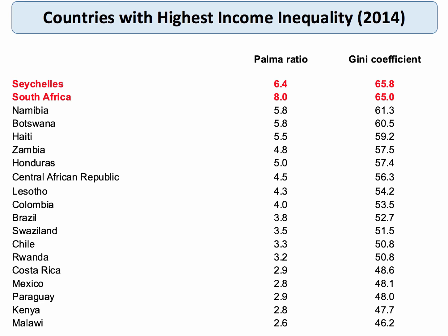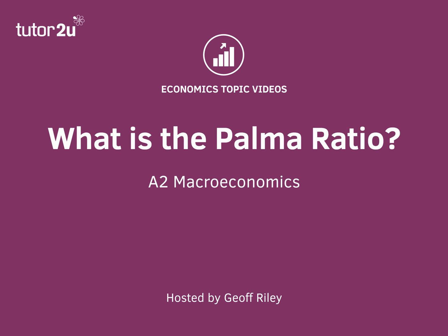And clearly these are countries like Zambia, Honduras, and Botswana, with very, very high levels of income inequality. So that is a look at the measure of income inequality known as the Palma Ratio.